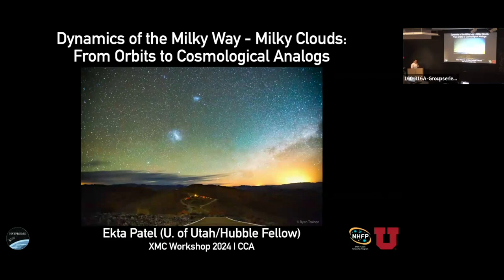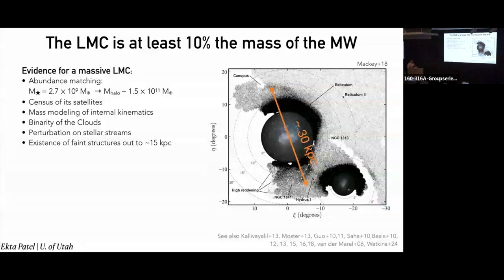You'll notice some of the plots we've already seen today, so I might go quick on a couple of slides. As we started to hear today and a little bit yesterday, we're learning, especially in the last decade or two, that the LMC is quite massive. For a long time, we were thinking the LMC was in the 10^10 solar masses range in terms of its entire halo mass. But more recently, with many different lines of evidence, we've started to learn that the mass of the LMC at infall into the halo of the Milky Way is about 10^11 solar masses, which puts it at about 10% of the mass of the Milky Way. My whole talk will focus on how we have started to learn about the implications of the fact that the LMC is a massive satellite interacting with our own galaxy.